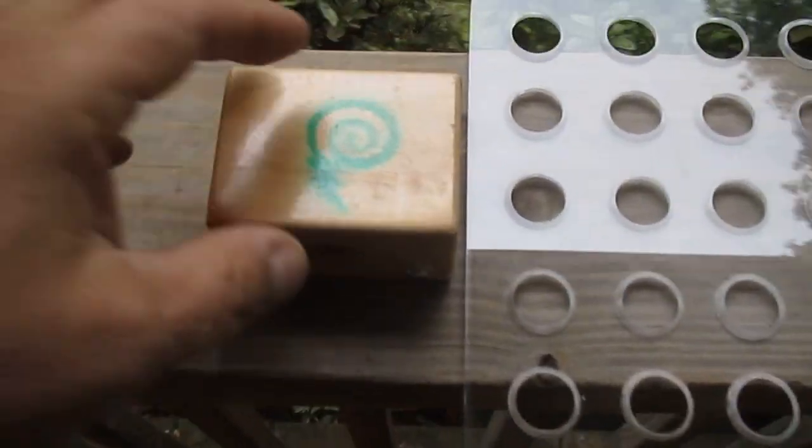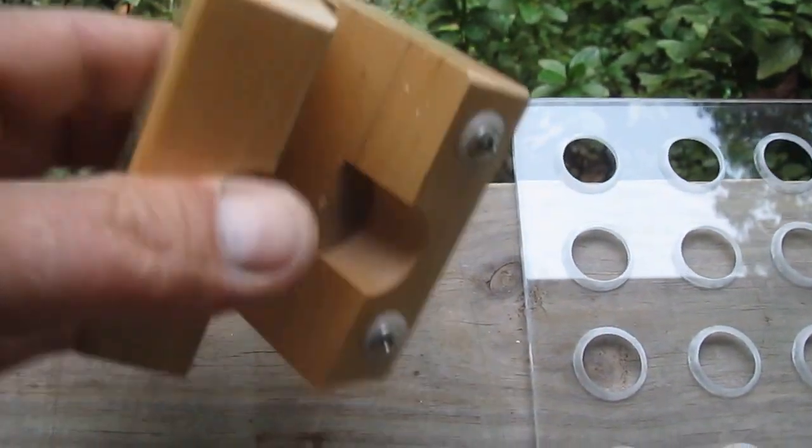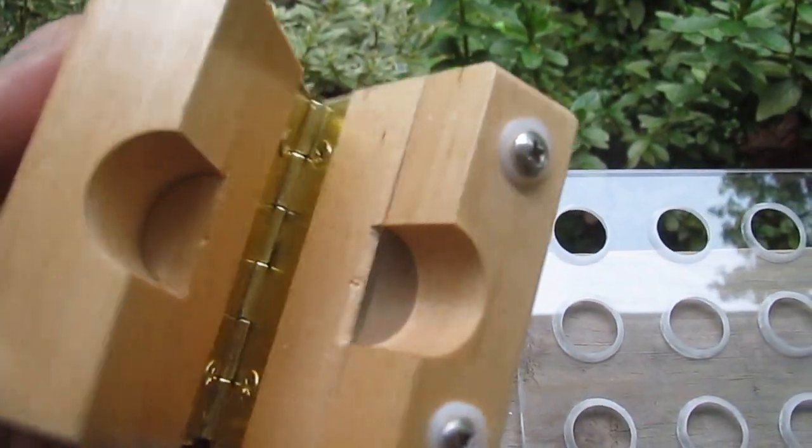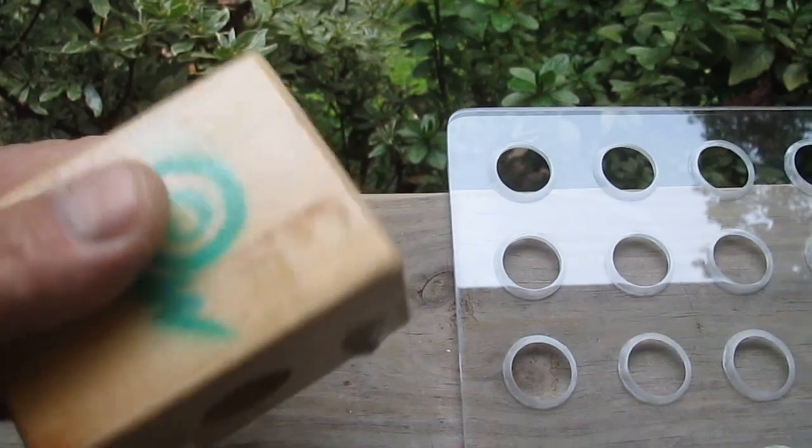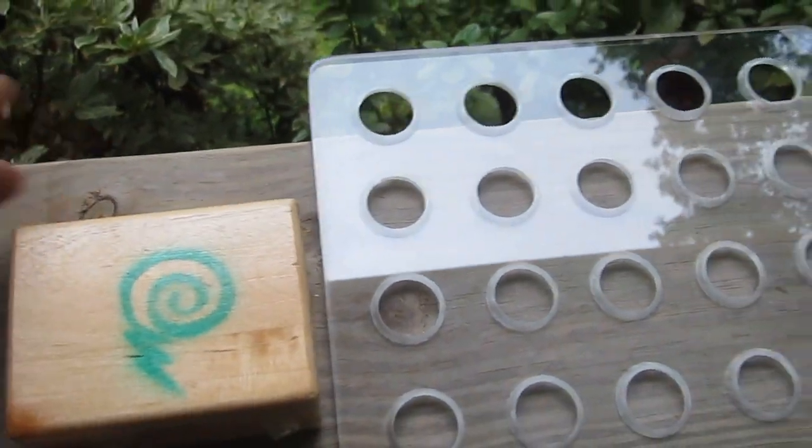You get a trimmer made of maple. This trims shot shells rapidly with nice repeatable results. It's got a replaceable blade that you can get at any hardware store.